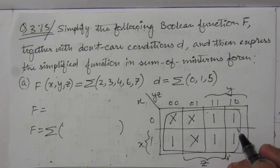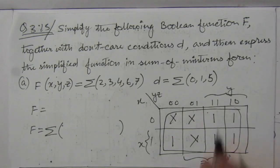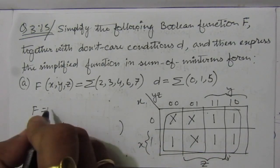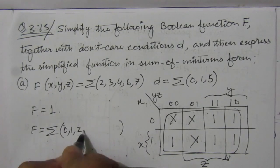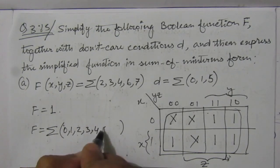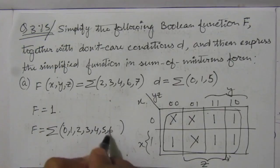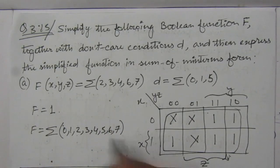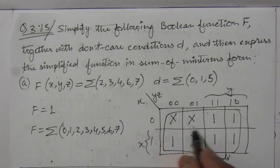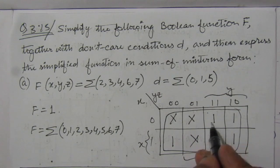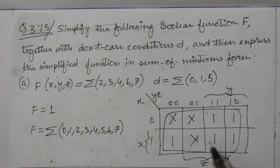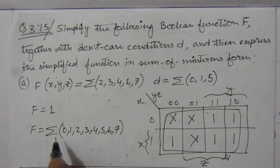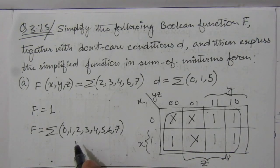We can combine the whole as a simple function. We can see that x, y, and z will all be cancelled, so we will get F equal to 1. The sum of minterms will be 0, 1, 2, 3, 4, 5, 6, and 7. All minterms are present because all are present in this combination, so the sum of minterms will be this.